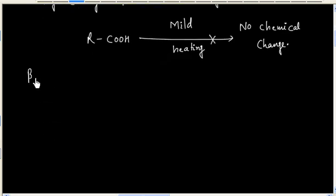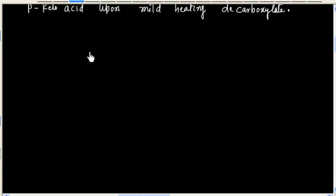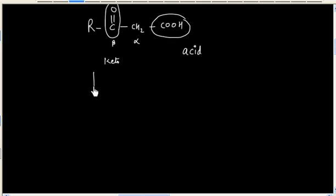But if a beta-keto acid is heated, it will decarboxylate. This carbon is the alpha carbon and this carbon is the beta carbon. So this compound contains an acid group and also has a keto group at the beta position — that is why it is called a beta-keto acid.